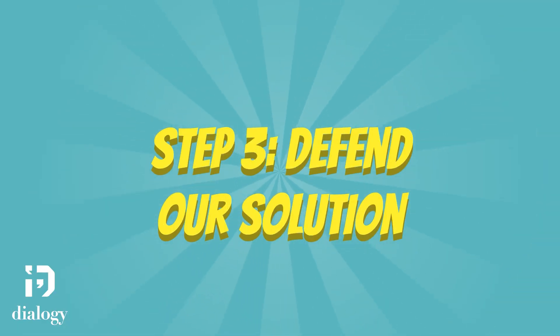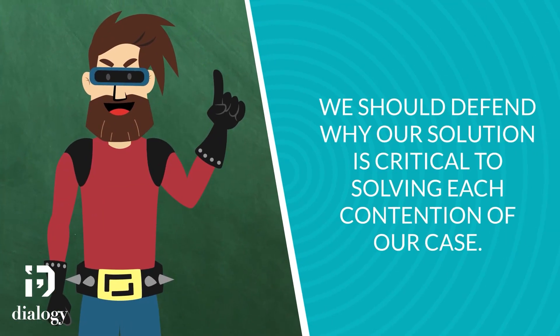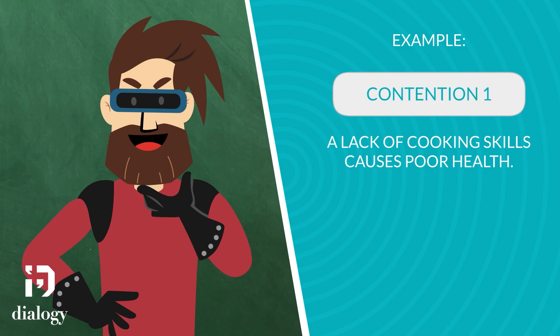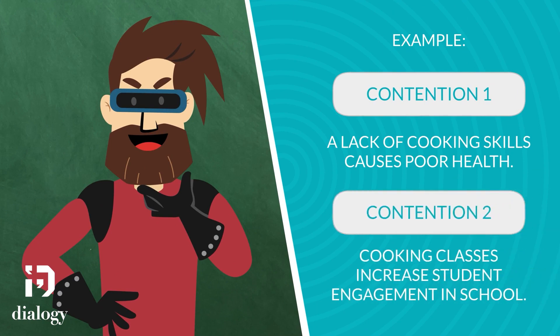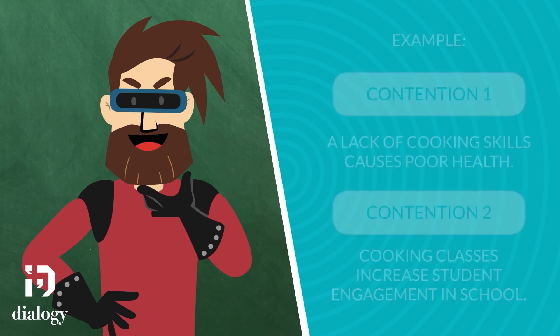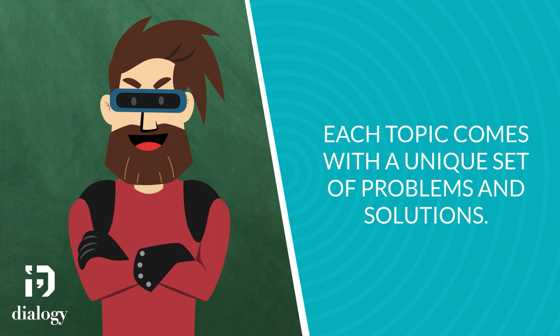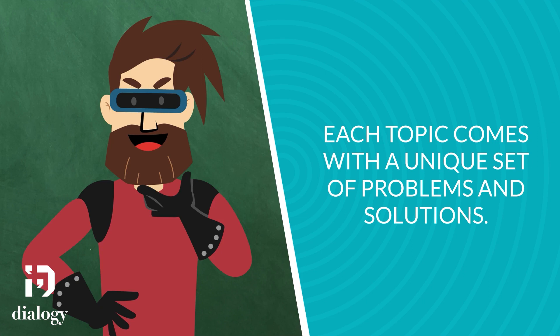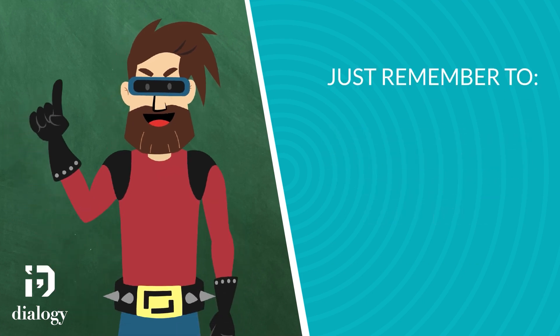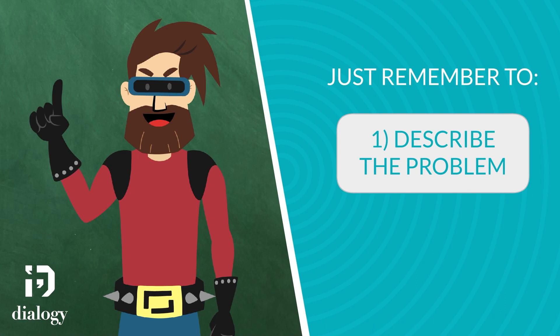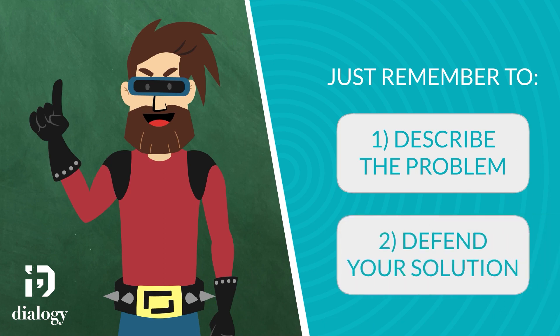Step 3: defend our solution. The last step is to defend our solution. We need to argue why our solution is critical to solving each contention of our case. For example, contention one might be that a lack of cooking skills causes poor health, while contention two might argue that cooking classes can increase student engagement at school. Thus, we must defend our solution for each problem we solve — unhealthy food choices and low student engagement. Please note that with each topic comes a different set of problems and solutions. But always remember: it's necessary to describe what you think is the problem, and defend why a cooking class is the best solution. Good luck!